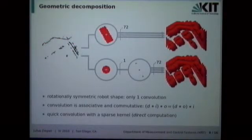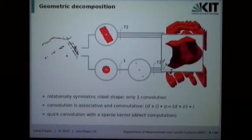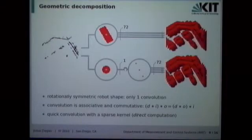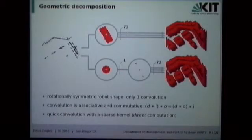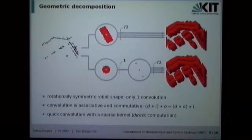This decomposition provides huge performance benefits. In the original approach, you need 72 FFT-based convolutions to yield the full three-dimensional configuration space. With our method, since the disc convolution is rotationally invariant, you only need one dense convolution, then 72 convolutions with the very sparse impulse kernel. For the sparse step, you don't perform a full FFT — instead, you do a single pass over the disc-convolved map to create the approximation of the configuration space obstacles.